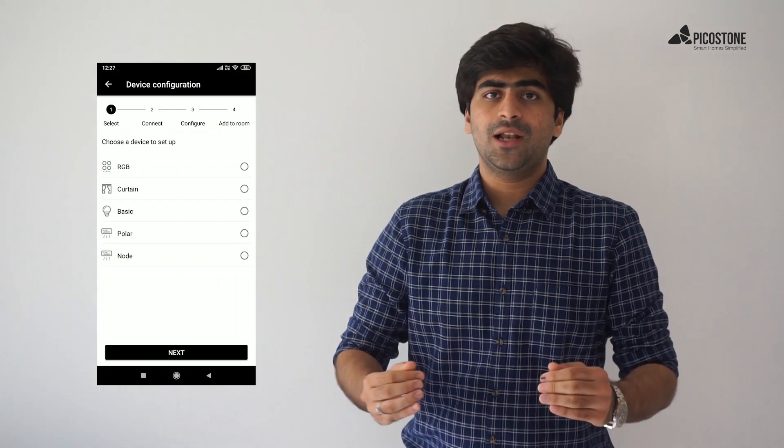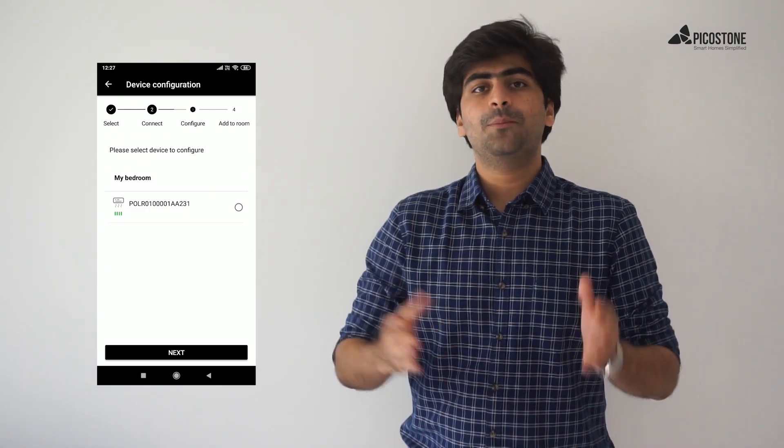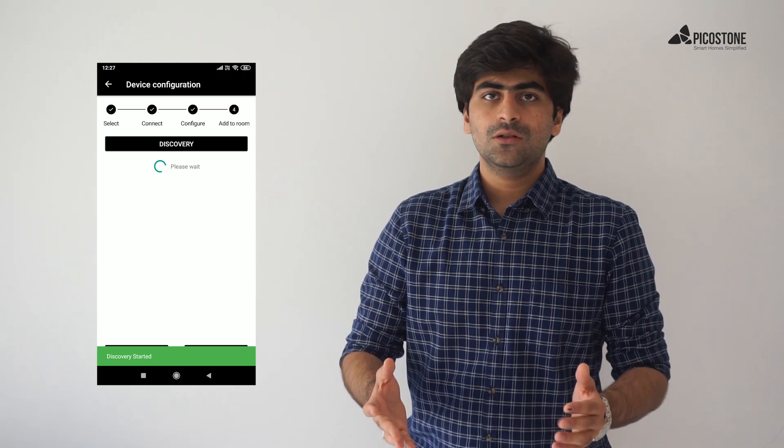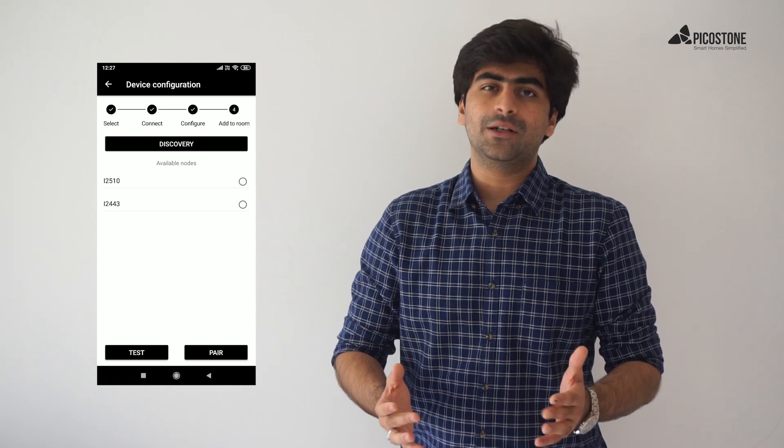The last line will contain node. Select that, go to the next step. Select the previously configured Polar, go to the next step. You will be able to see a discover button. Tap the discover button.